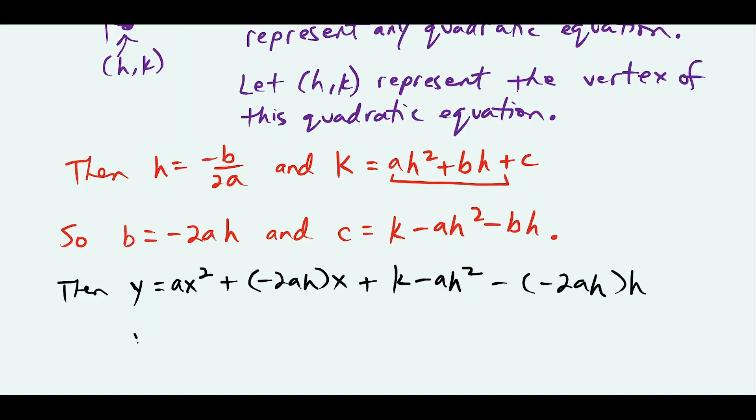So now we simplify. We'll have y equals ax squared minus 2ahx plus k, and then we have minus ah squared.